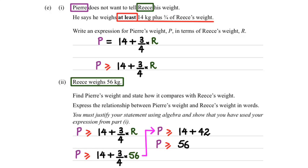So, writing this in a statement, keeping in mind similar things with that red box where it was written in bold at least, we can say that Pierre weighs at least 56 kgs.